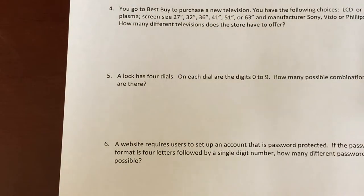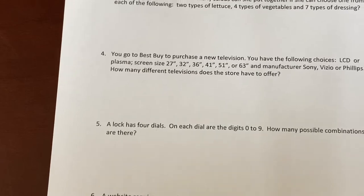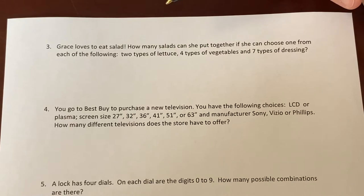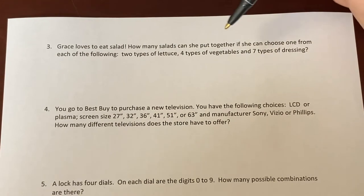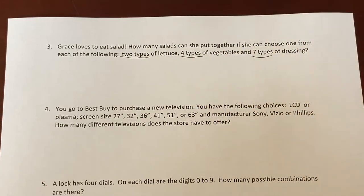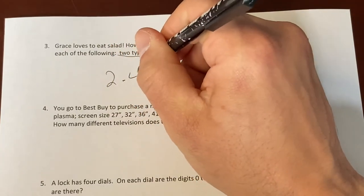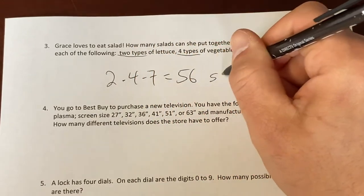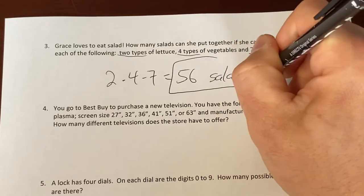I think what we'll do here is we will answer maybe three and four. And I'll give you five, six, and seven for homework. Grace loves to eat salad. How many salads can she put together if she can choose from one of each of the following? Two types of lettuce, four types of vegetables, seven types of dressing. Two times four times seven. Use your calculator if you need it. 56 different salads.